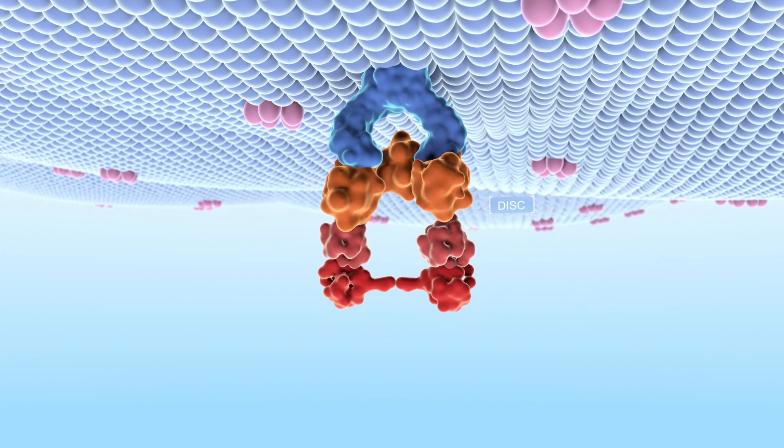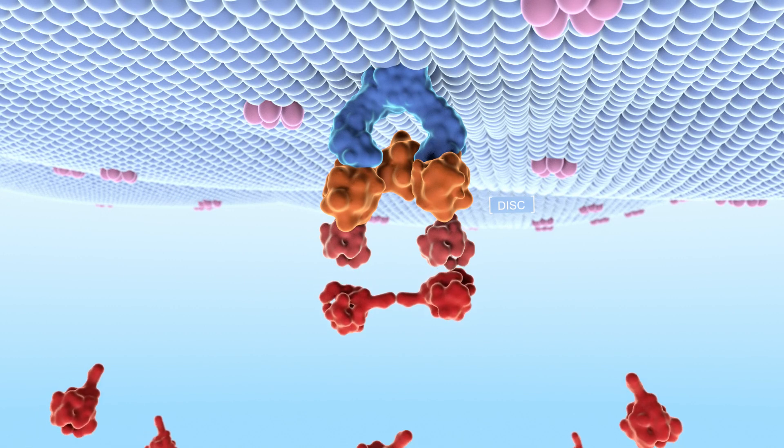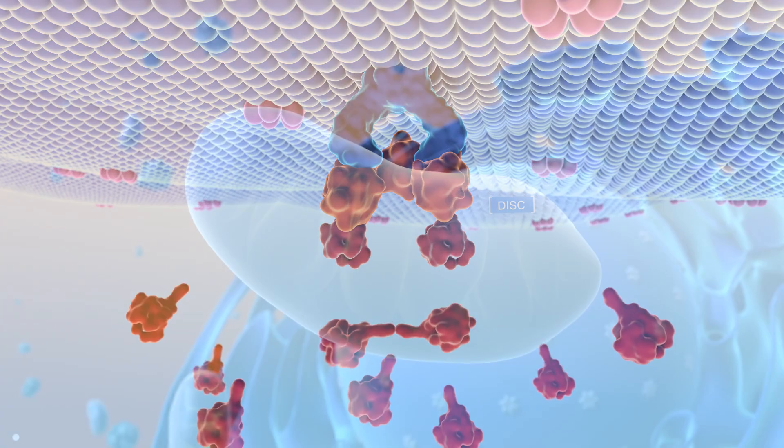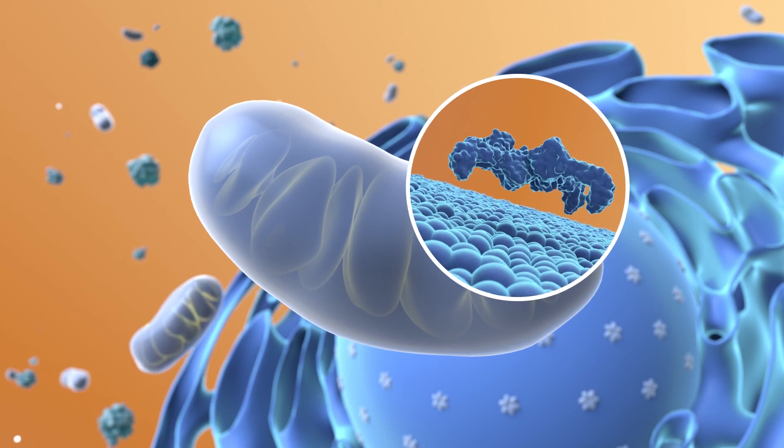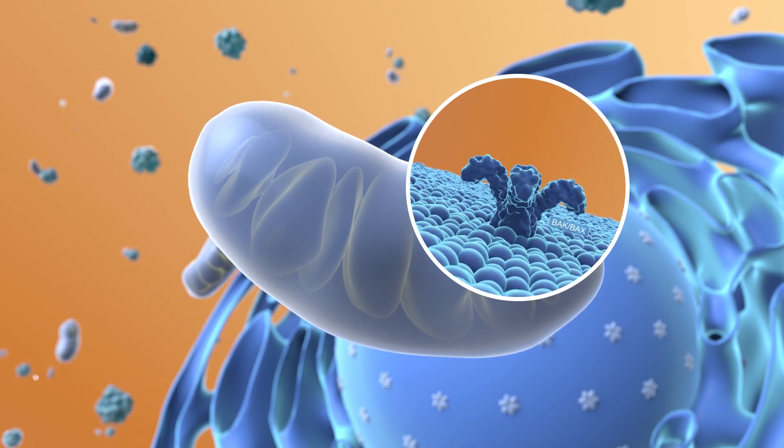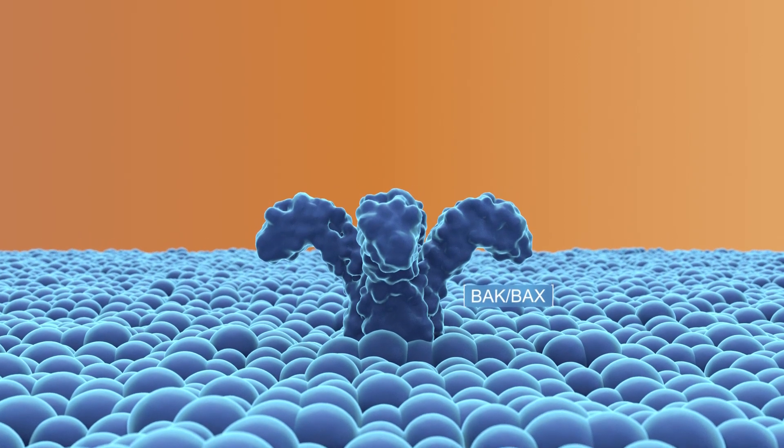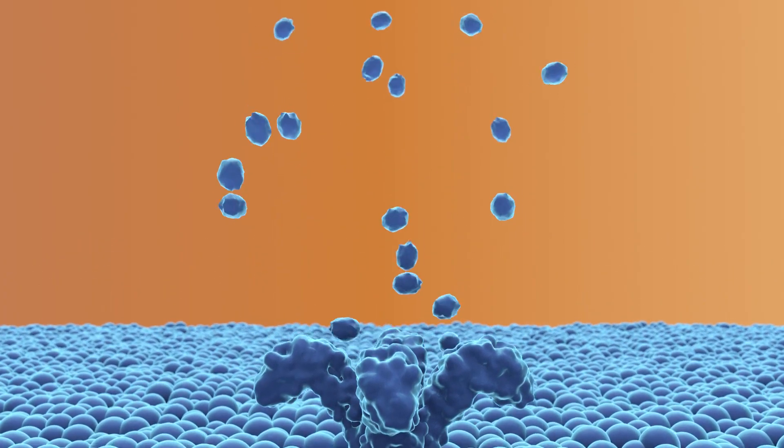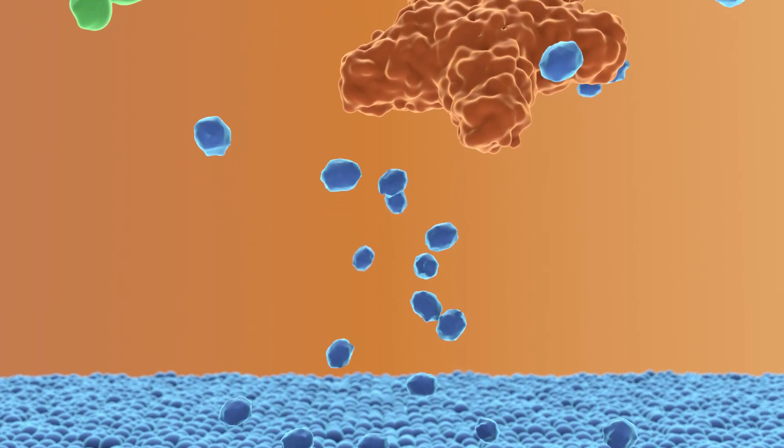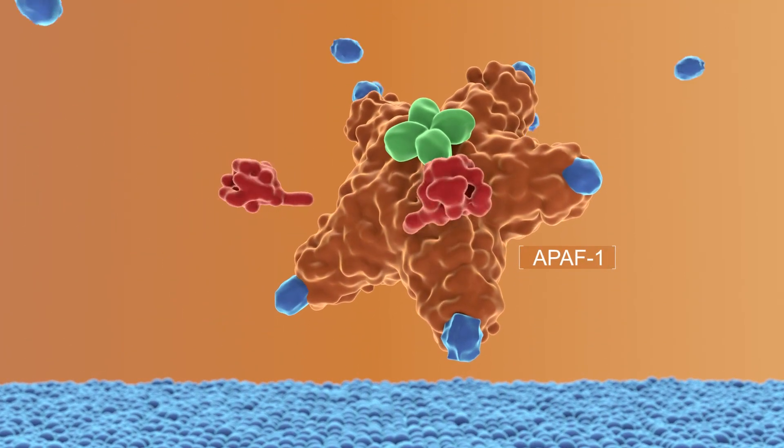The DISC complex activates other caspases and induces apoptosis. In the intrinsic pathway, the BCL-2 family mediates the induction of permeabilization of the outer mitochondrial membrane, which results in the release of cytochrome C and the formation of the apoptosome, triggering the caspase cascade.